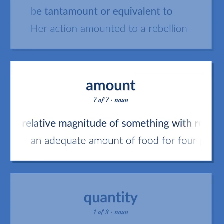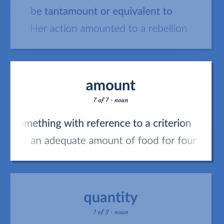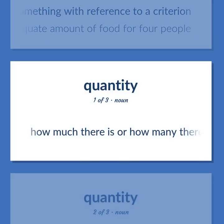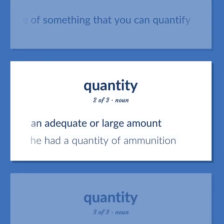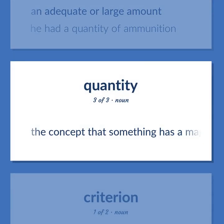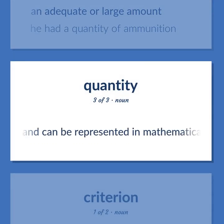Quantity: The relative magnitude of something with reference to a criterion. An adequate amount of food for four people. How much there is or how many there are of something that you can quantify. An adequate or large amount; he had a quantity of ammunition. The concept that something has a magnitude and can be represented in mathematical expressions by a constant or a variable.